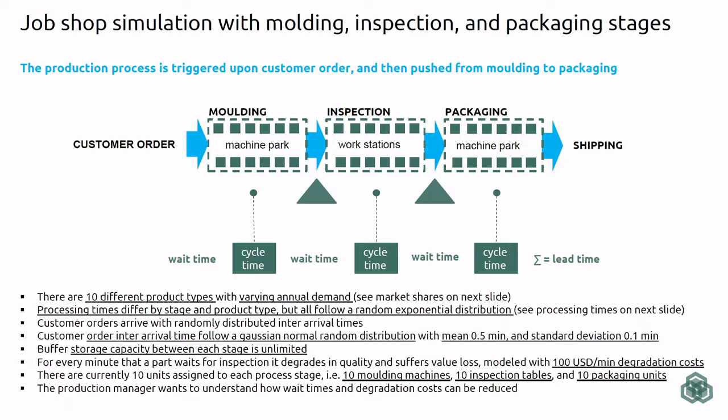For example, if we molded a product or a part that will be contained by a product, and an inspection table is not available to conduct the inspection process, then we will have to buffer this production order and the associated products in the buffer. The same goes for jobs that need to queue ahead of packaging if a packaging machine is not available.